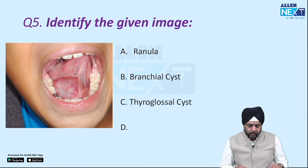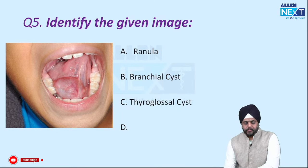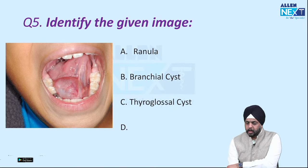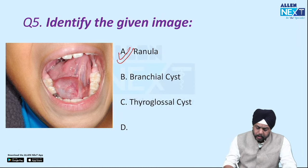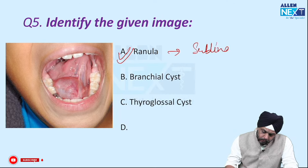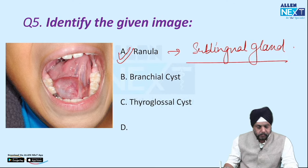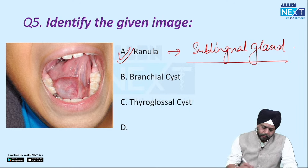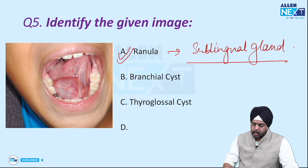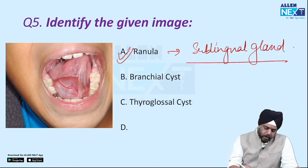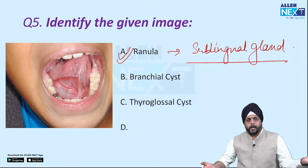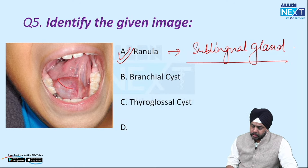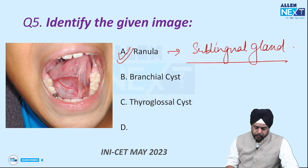Spot diagnosis — identify the given image. Such spot diagnosis questions also come in INICET. This is a case of ranula. Ranula is an extravasation cyst that arises from the sublingual gland. If it comes to the submandibular space, it is known as a plunging ranula and requires external excision. For this type of ranula, we can do internal/intraoral excision or marsupialization — just cut it open.